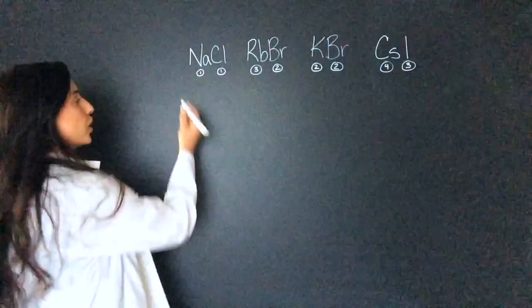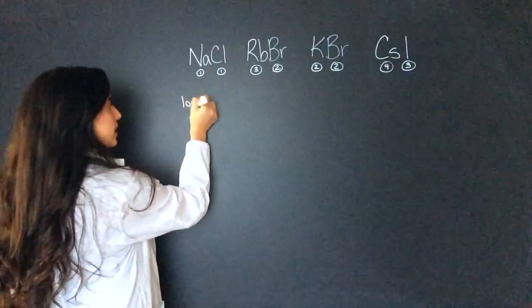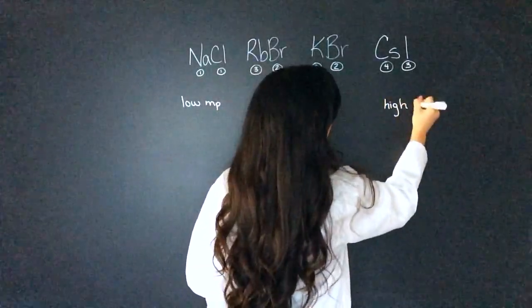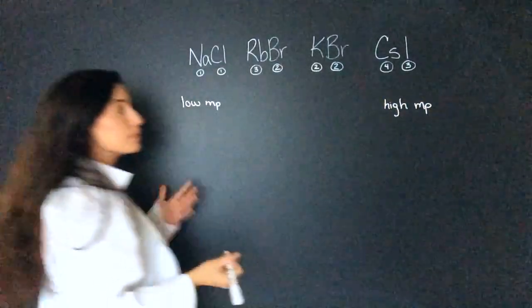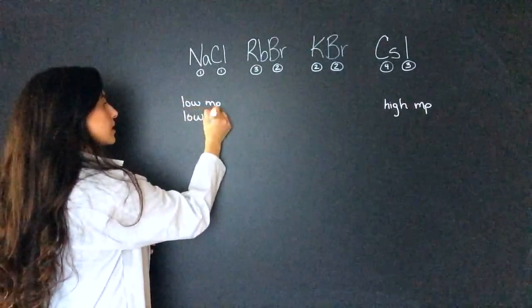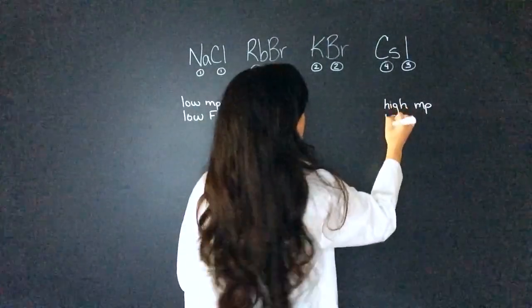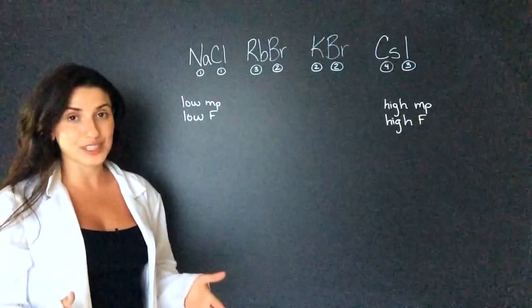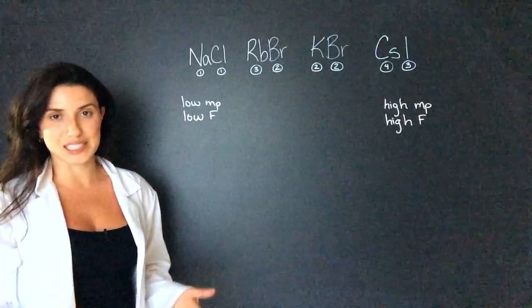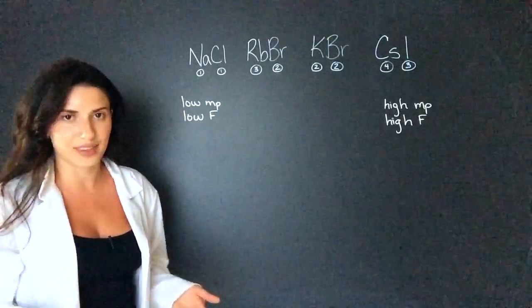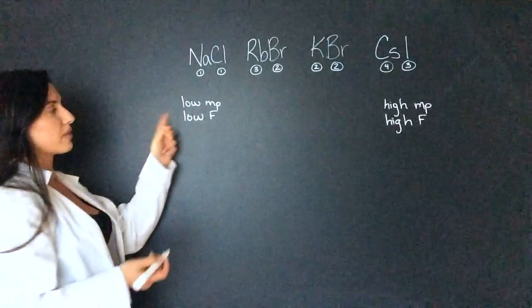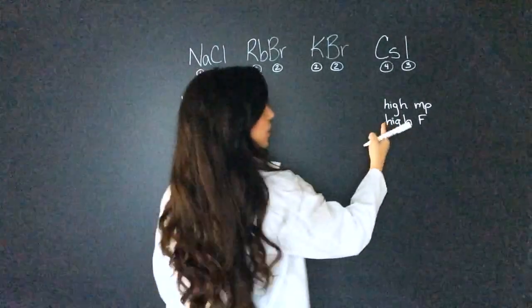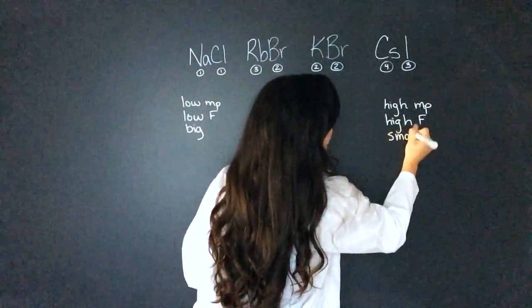So now I want to go from low melting point to high melting point, which means I want to go from a low force to a high force. And I know that the force is inversely proportional to the distance between the atoms, aka the size of the atoms. So if I want a low force I want big, and if I want high force I want small ions.